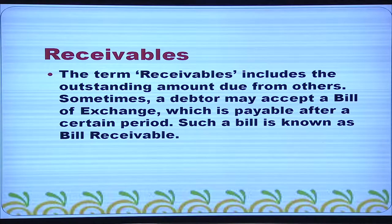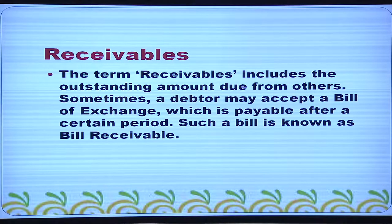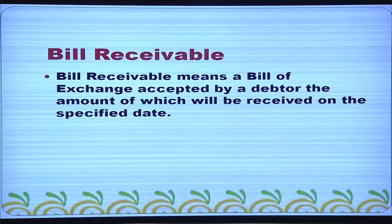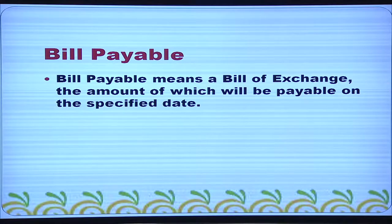Receivables include the outstanding amount due from others. Sometimes a debtor may accept a bill of exchange payable after a certain period — such a bill is known as bills receivable. The term payables includes amounts due to others; trade creditors, bills payable, etc. can be included as payables. Bills receivable means a bill of exchange accepted by a debtor, the amount of which will be received on a specific date. Bills payable means a bill of exchange the amount of which will be payable on a specified date.